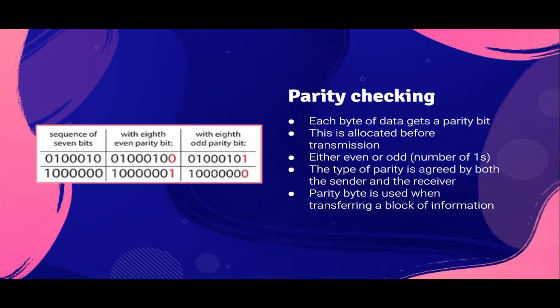First, parity checking is an error checking method. In this, each byte of data gets a parity bit, which is allocated before transmission. It's either even or odd parity. Data following even parity has an even number of ones, and data following odd parity has an odd number of ones.